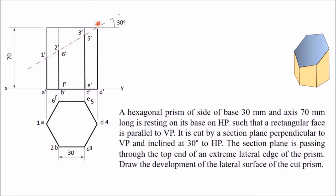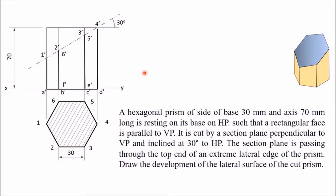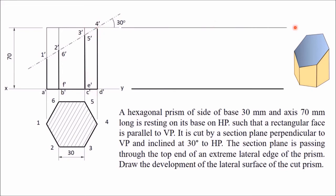Mark all the intersection points as 1, 2, 3, 4, 5, 6. When viewed from top, only these points are visible, so the overlapping labels are removed, keeping only 1, 2, 3, 4, 5, 6. The entire top section of the hexagon is cut, so draw hatching lines across the entire hexagon. This gives the required front view and top view of the cut prism. Now we will draw the development of the lateral surface using the parallel line development method, which is used for prisms and cylinders.